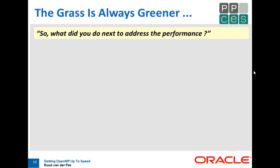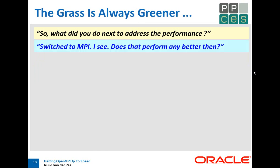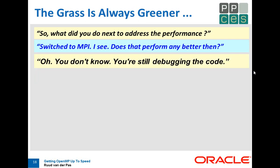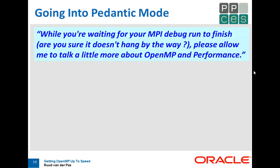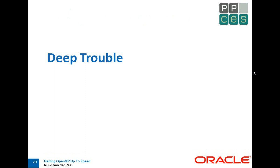So what did you do next to address — you clearly have a performance problem. Oh, you switched to MPI. Does that perform any better? You don't know, you're still debugging the code. Well, while you're waiting for that run to finish — oh, by the way, are you sure it doesn't hang? Let me talk a little bit more about OpenMP and performance. We go into OpenMP in performance, and I call this section Deep Trouble for a good reason.